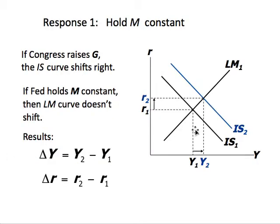Here we have an increase in government expenditure. The IS curve shifts upward from IS1 to IS2, resulting in a higher equilibrium interest rate and higher equilibrium output. The first option for the Fed is to do nothing — just allow the equilibrium interest rate and output to rise — which means holding money supply constant. The Fed is not using its tool in this case, just letting fiscal policy have its impact on the economy.